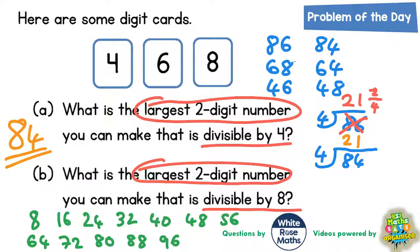So 86 is not in the eight times table. 88 is, but 86 isn't. So that doesn't work.